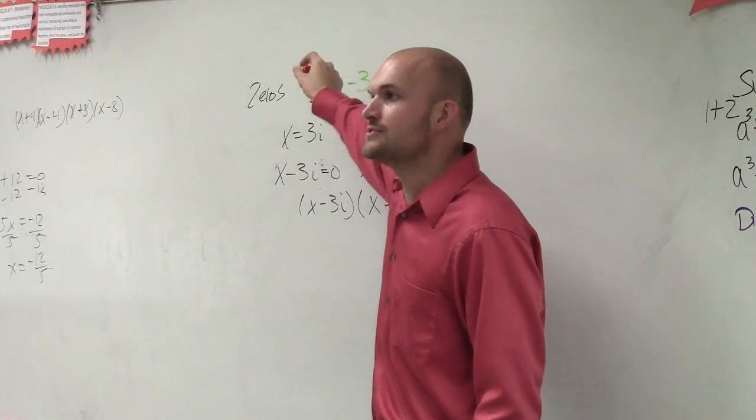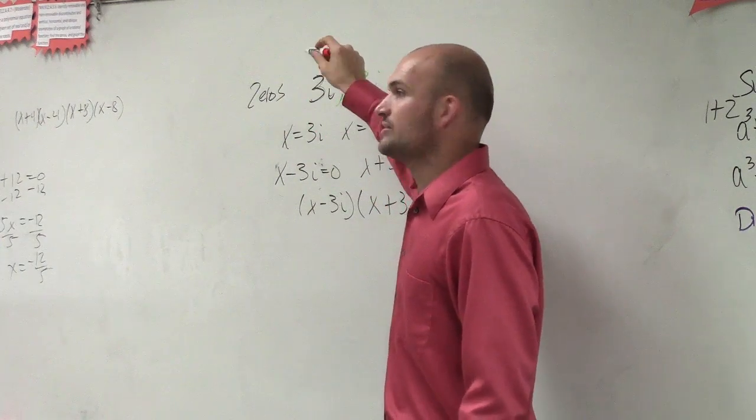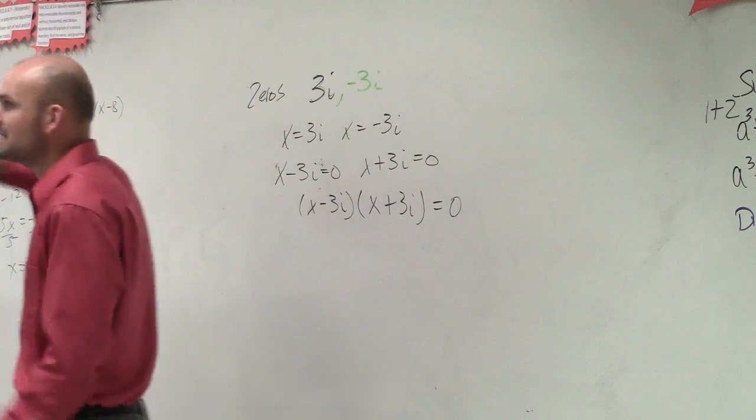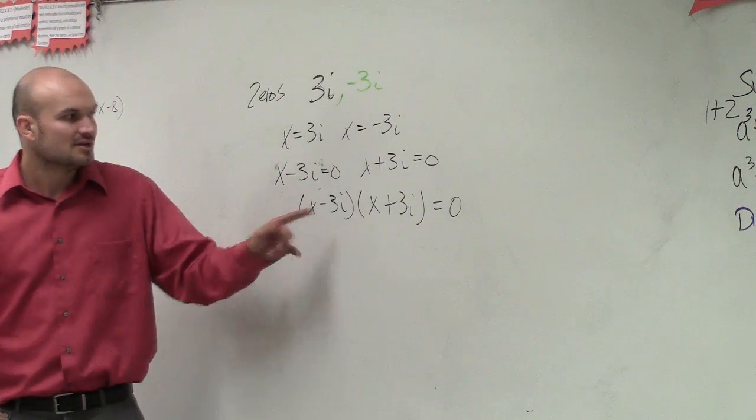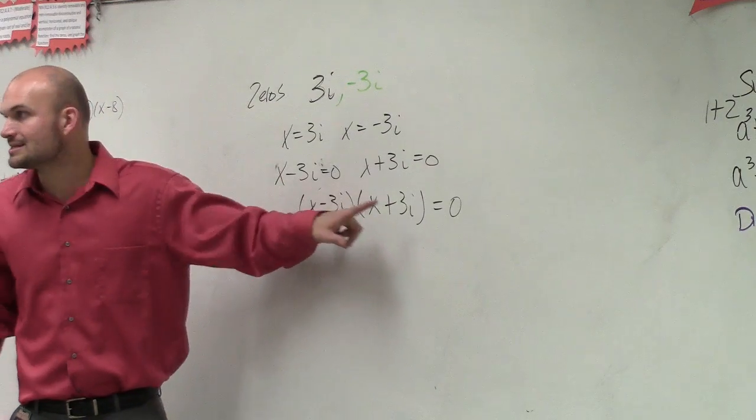So this times this equals zero, that's when you find the values of x, those are your zeros. But they're not asking us for the values of zeros. They're asking us, what is the polynomial? So that means I need to multiply this times this.